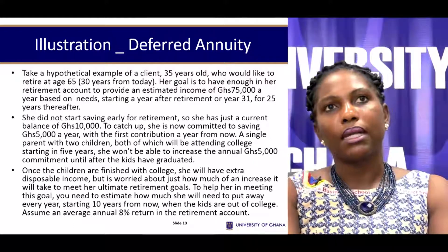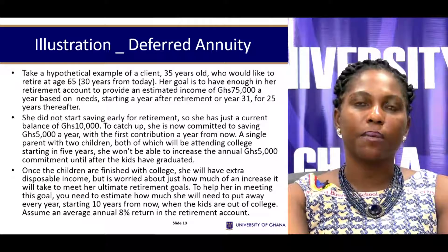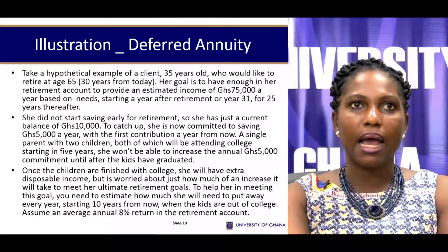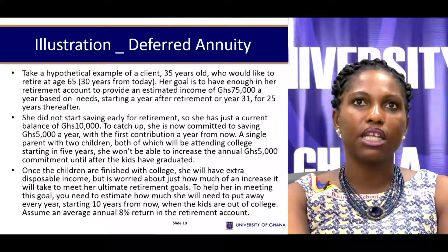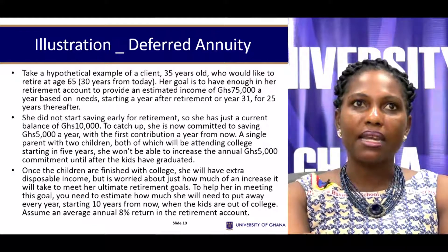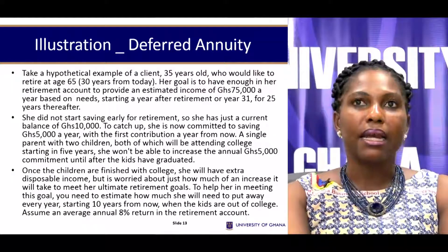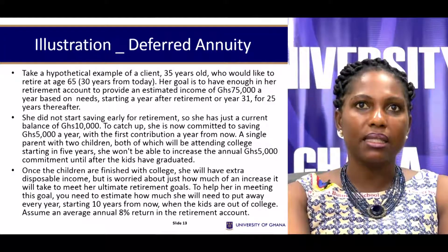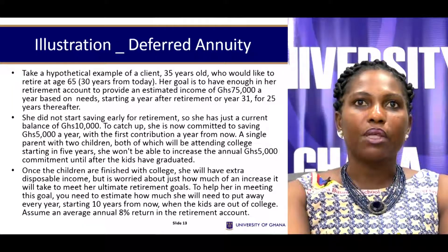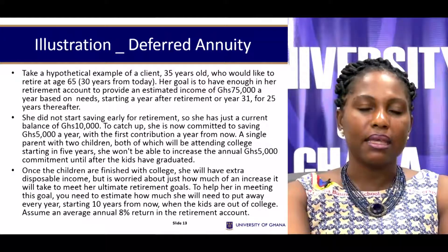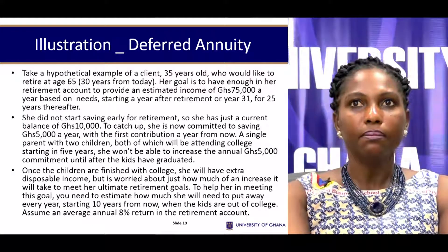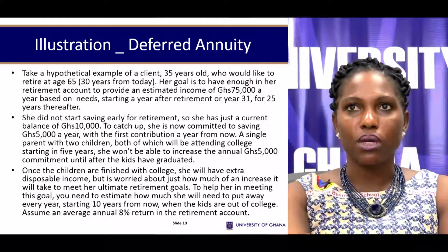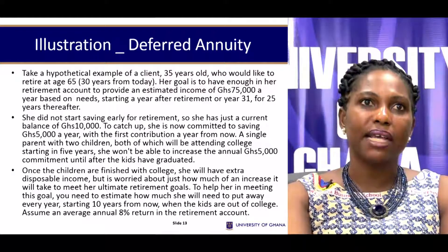Here is a typical deferred annuity example. Consider a hypothetical client who is 35 years old and would like to retire at age 65 — that is 30 years from today. Her goal is to have enough in her retirement account to provide an estimated income of $75,000 every year. This income is supposed to start one year after retirement, i.e., 31 years from today, and she hopes to live for 25 years thereafter.